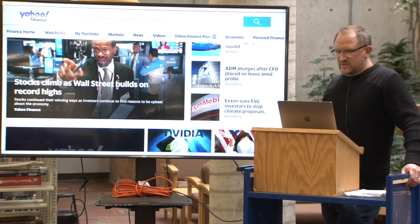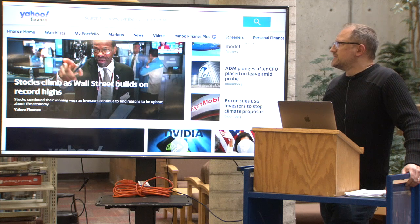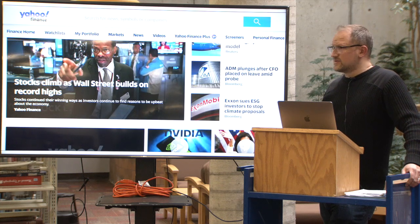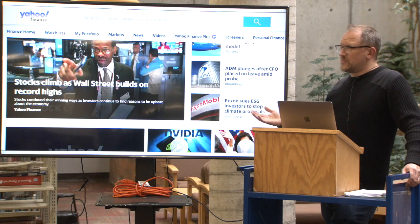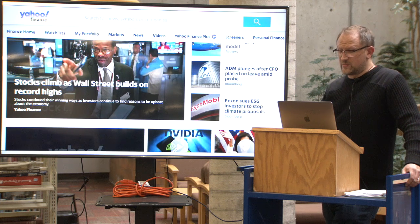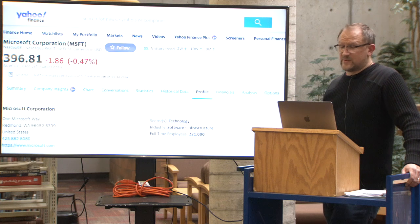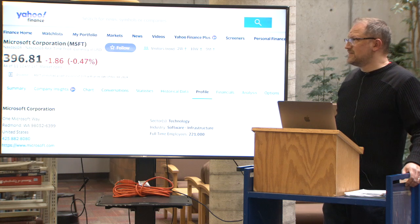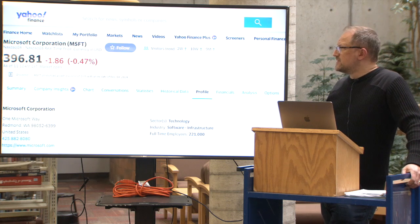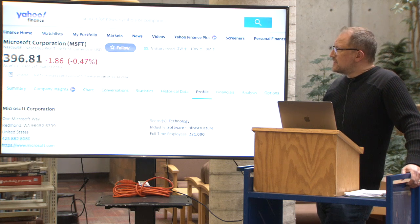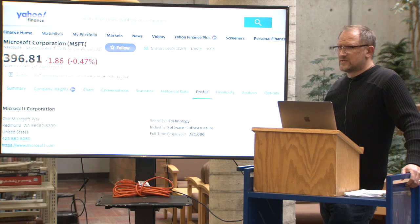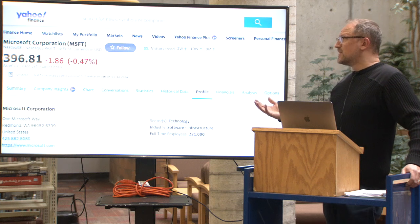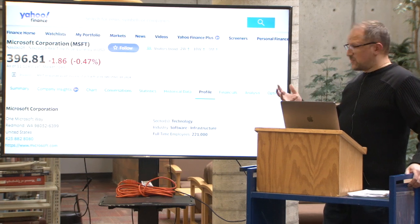When searching for public companies it's pretty easy. You can go to Yahoo Finance, type in either the company name or the stock symbol, and get all kinds of information back. In this case I was looking for Microsoft — MSFT is the symbol, and you can see it trades on the NASDAQ exchange. Because it's regulated by the Securities and Exchange Commission, they're required to publish this data.